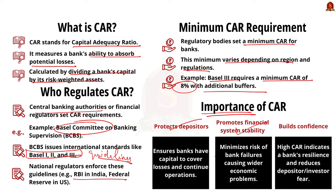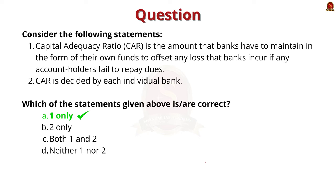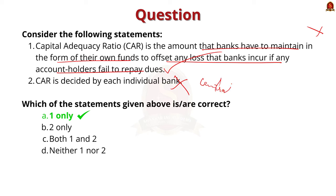With this understanding about CAR, let's go back to the question. Statement 1 says CAR is the amount that banks have to maintain in the form of their own funds to offset any loss if any account holder fails to repay. Yes, this statement is correct. With respect to Statement 2, CAR is decided by each individual bank — this statement is incorrect. As we discussed, CAR is not decided by individual banks; instead, it is regulated by central banking authorities or financial regulators. So the correct answer for this question is Option A, 1 only.